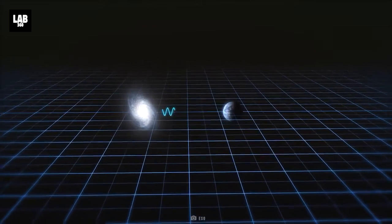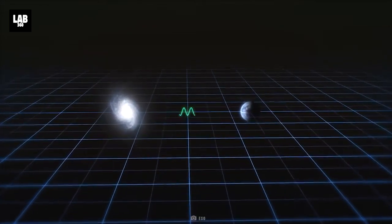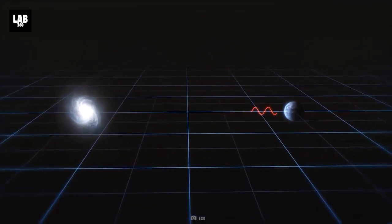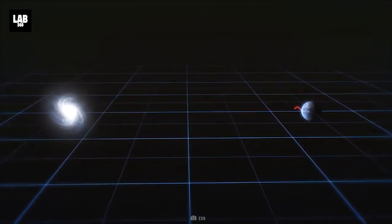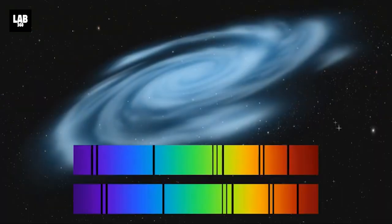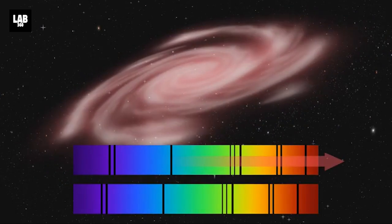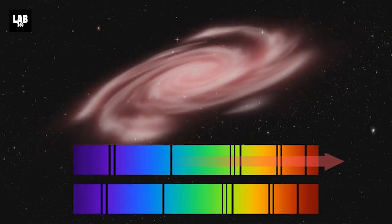Hubble also gave us redshift, the stretching of light. When a distant celestial object releases light, this light, when traveling through the universe, gets stretched, pushing the light to the red end of the light spectrum. So the redder the light, the farther the galaxy.